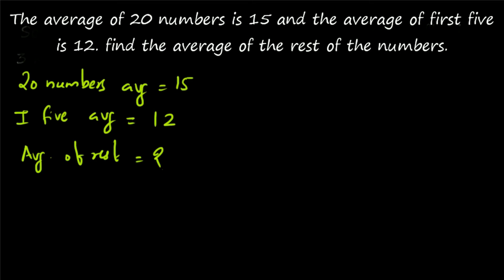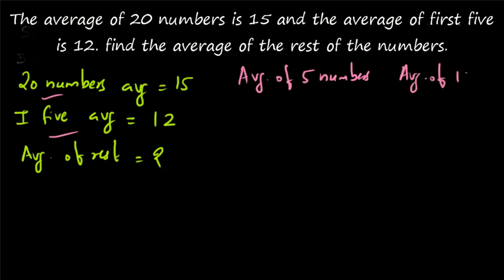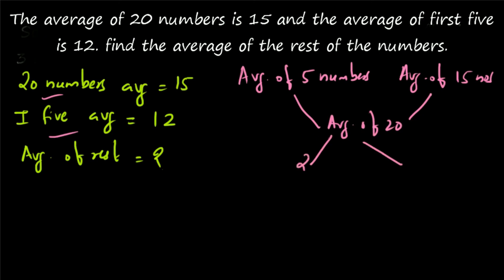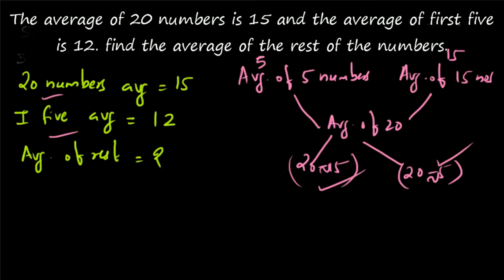Here also you can apply the principle of allegation. Whenever the total average is given — here the total average of 20 numbers is given, and the average of the 5 numbers is also given — the average of 5 numbers and the average of 15 numbers, when combined, give the average of 20 numbers. You find the difference between the average of 20 and the average of 15 numbers, and between the average of 20 and the average of 5 numbers. The numbers here are 5 and 15, so the ratio is 1 to 3, or equivalently 5 to 15.